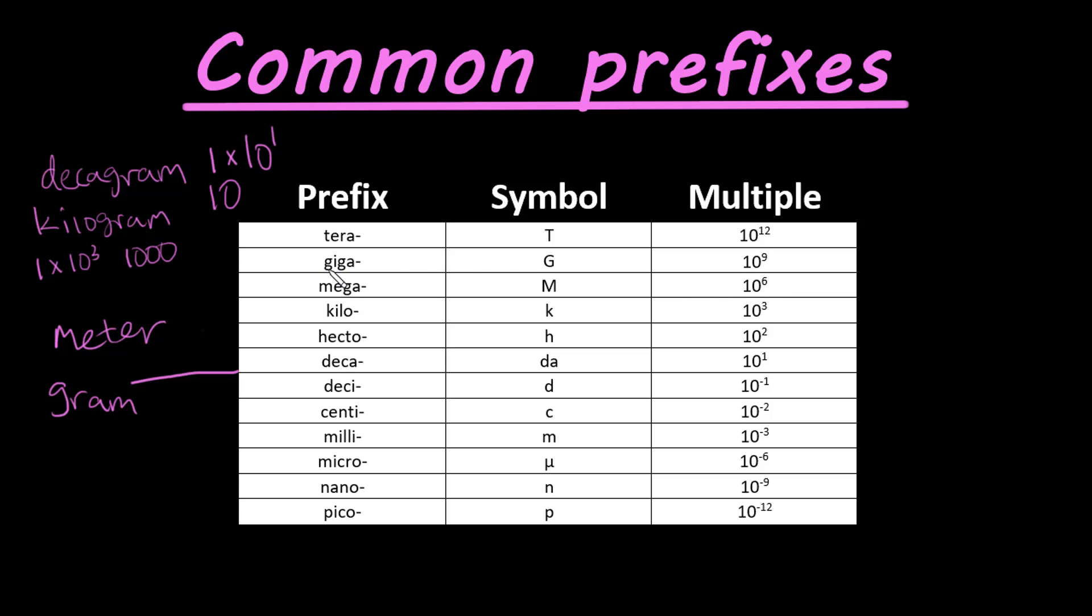And we have a prefix giga. So like, if you know, like gigabyte, byte would be our base unit. So we multiply a byte times 10 to the ninth, and that's one gigabyte is equal to that many bytes. Symbol is big G, then tera. Symbol is big T. The multiple is 10 to the twelfth.